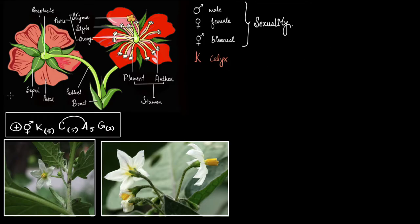Next we have K, which stands for calyx — the sepals. Here K is five, meaning this flower has five sepals. They are placed under brackets, which simply means those parts are fused — there is cohesion between the sepals. So whenever you see brackets, it means cohesion, or the parts are attached to each other.